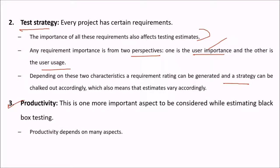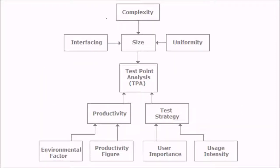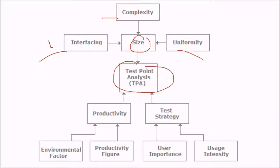What about productivity? This is an important aspect to be considered. Productivity depends on various aspects: complexity, interfacing, and uniformity. So we have found the TPA — test point analysis — which uses productivity and test strategy. Test strategy is based on user importance and user usage intensity, and productivity depends on the environmental factor.